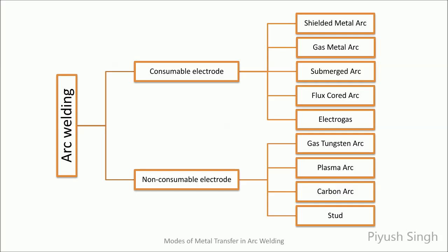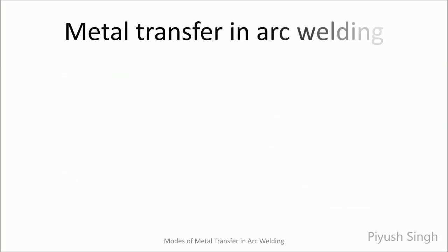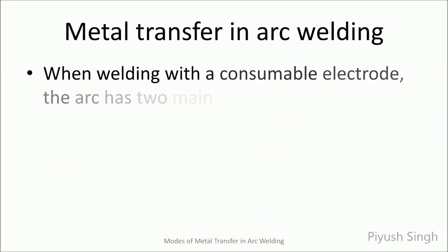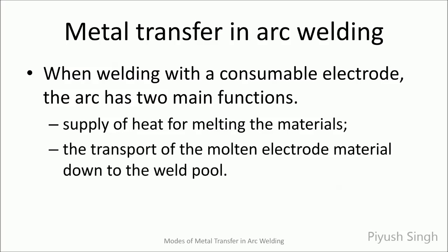Some of the common processes of the two types are mentioned here. In consumable electrode welding processes, the electrode gets melted and deposited to form the weld bead. This melting and transport of matter is accomplished by the arc.